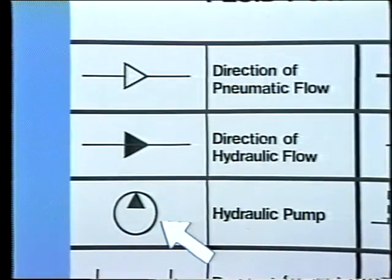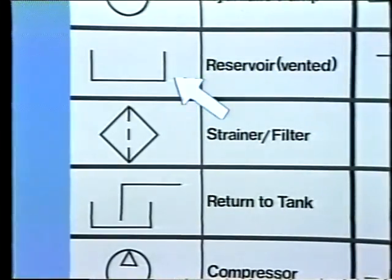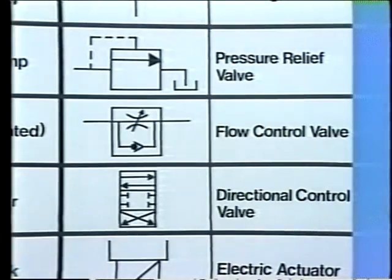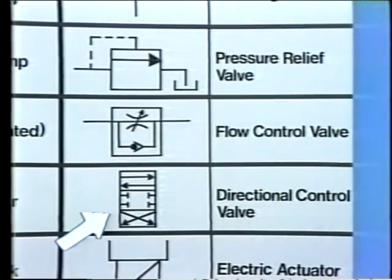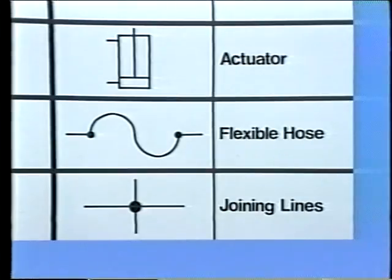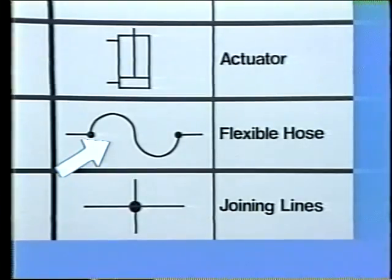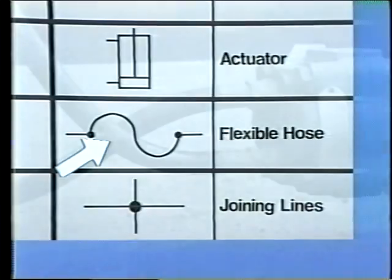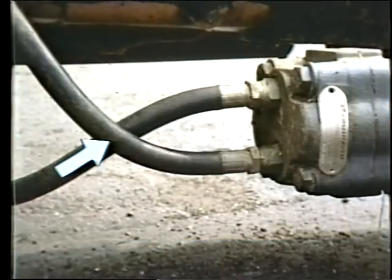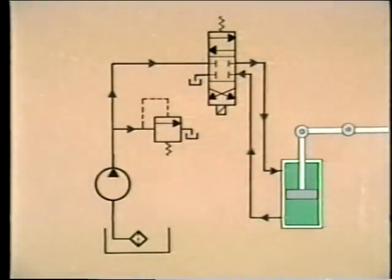The key symbols in a fluid power schematic include the hydraulic pump, a vented hydraulic reservoir, a strainer or filter, a pressure relief valve, a flow control valve, and a directional control valve. Many fluid power systems also use flexible hoses — identified by their own symbol — in addition to or in place of tubing. Flexible hoses are often used when a connection must be made to a piece of equipment that moves or vibrates as it operates.